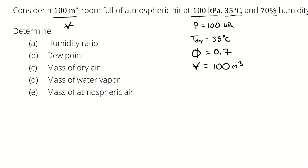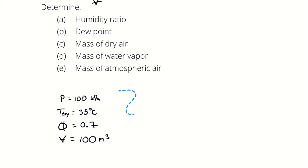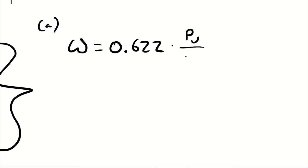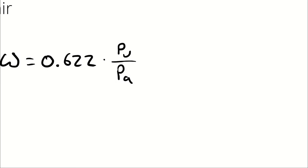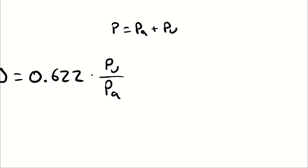So I'm using that information to calculate a variety of properties. First up, I want to calculate the humidity ratio. We know humidity ratio is going to be 0.622 times the partial pressure of the water vapor divided by the partial pressure of the dry air. We know the mixture pressure, and if we knew either Pa or Pv, we could figure out the other. We're going to have to come up with a method to calculate Pv, and that's going to be from our relative humidity.